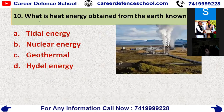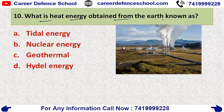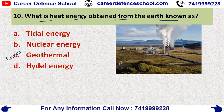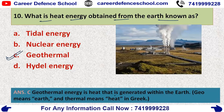Next: what is heat energy obtained from the earth called? The options are tidal energy, nuclear energy, geothermal energy, or hydal energy. The correct answer is option C — geothermal energy. Geothermal energy is heat that is generated within the earth; 'geo' means earth and 'thermal' means heat.